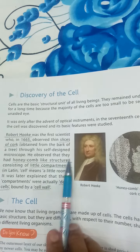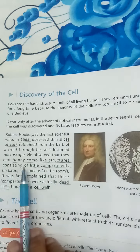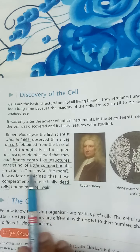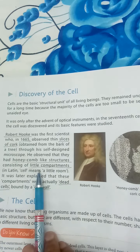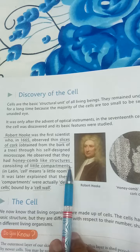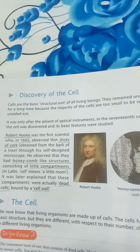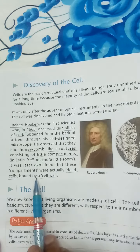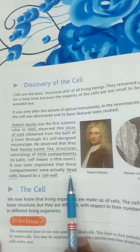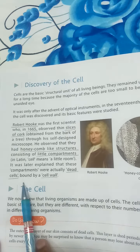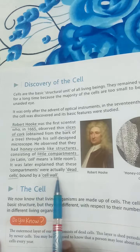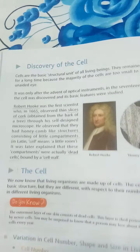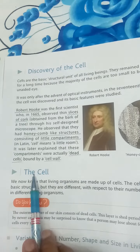Robert Hooke observed the cell in a thin slice of cork through his self-designed microscope. He observed that it had a honeycomb-like structure consisting of little compartments. It was later explained that these compartments were actually dead cells bounded by a cell wall.